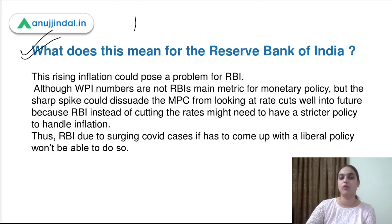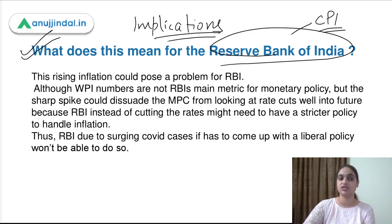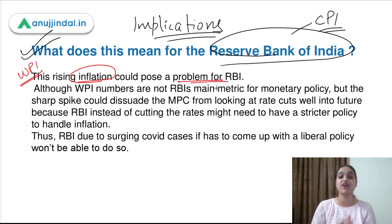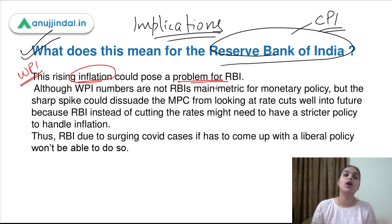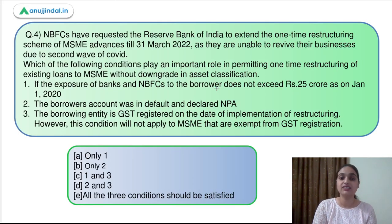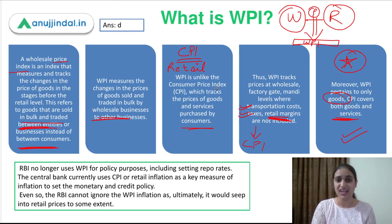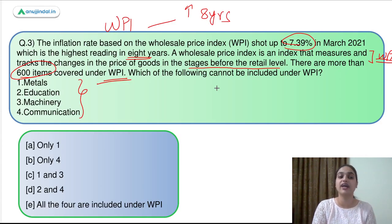What does this mean for RBI? What kind of implications does it have? As already mentioned, Reserve Bank of India majorly uses CPI for its policy formulation, but still it cannot ignore WPI. This rising WPI can obviously pose a problem for RBI. RBI is trying to provide more liquidity in the economy because of COVID and is following a more liberal, accommodative stance. But if this inflation continues to increase, it will be a problem for RBI — to control inflation, RBI needs to have a stricter policy, but because of the pandemic it wants to have a liberal policy. So there will be a conflict about what kind of policy RBI should follow. That's why we need to make sure this inflation gets targeted and doesn't increase beyond certain target levels.